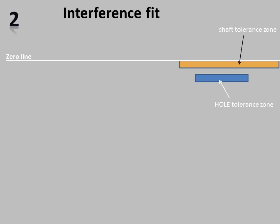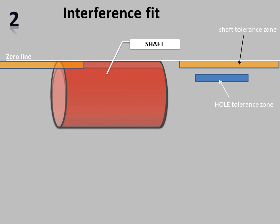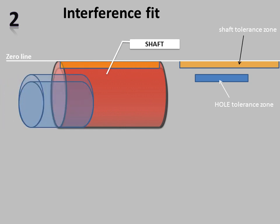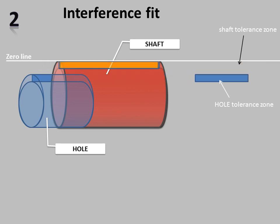This is an example of interference fit. In interference fit, the upper limit of hole must be less than the lower limit of shaft. This is the upper limit of shaft, lower limit of shaft, and tolerance zone of shaft. Similarly, upper limit of hole, lower limit of hole, and tolerance zone of hole. Here, the upper limit of hole is less than the lower limit of shaft. In interference fit, the tolerance zone of hole will always be on the lower side of the tolerance zone of shaft.